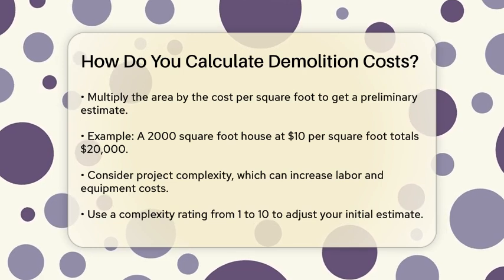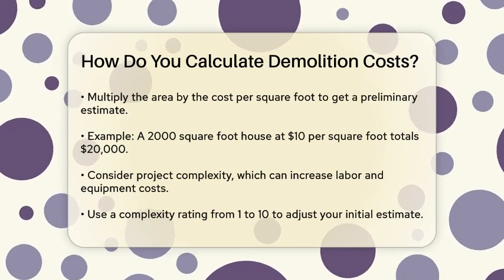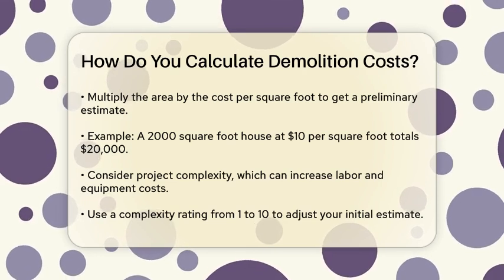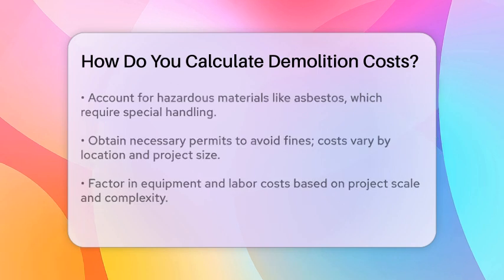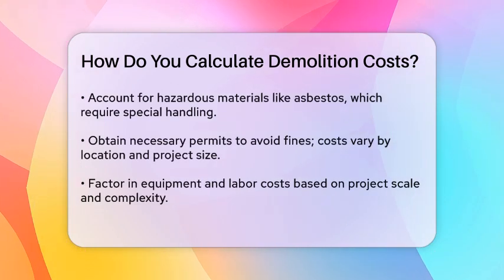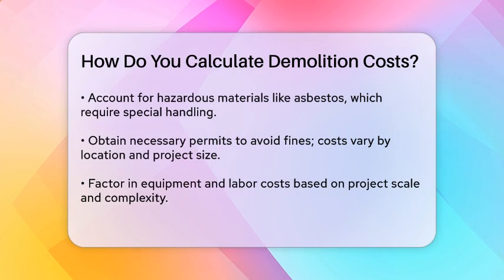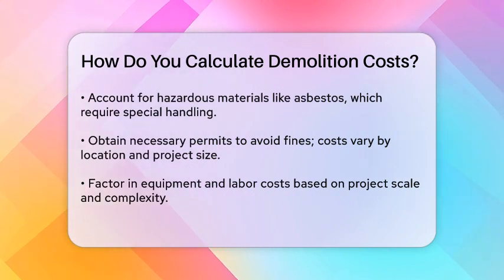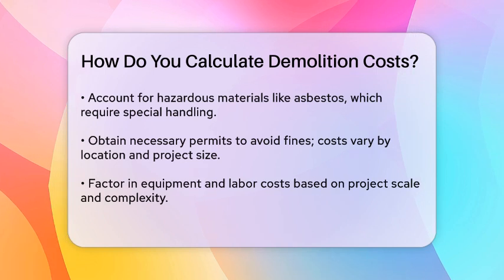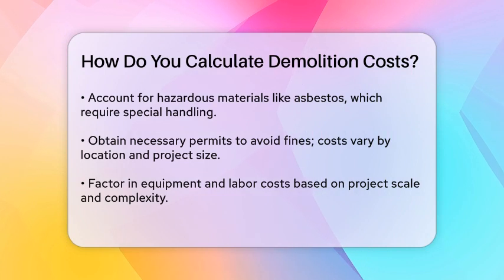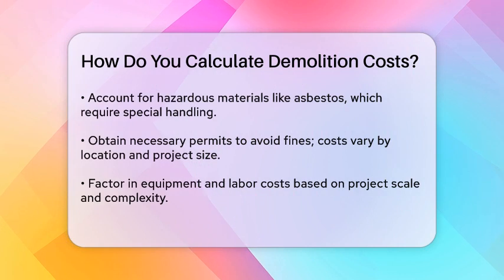Permits and regulations are also important. You need to obtain the necessary permits, and failure to do so can result in fines. The cost of permits varies depending on the location and size of the project. Equipment and labor costs are significant as well. The type and amount of equipment needed will depend on the size and complexity of the project. A small residential demolition might only need a few pieces of equipment, while a large commercial demolition will require heavy machinery like excavators and bulldozers. Labor costs will also vary based on the number of workers needed.